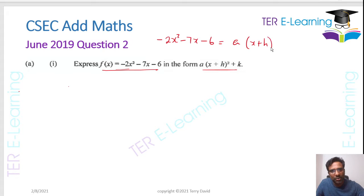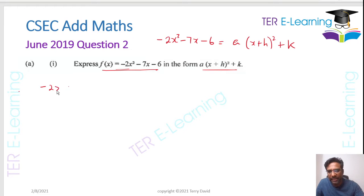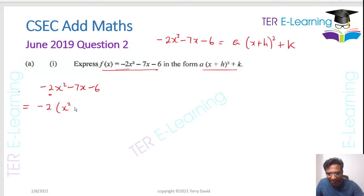We want to write it in the form a(x + h) all squared plus k. Now, the first method — we can factor out this minus 2, so this becomes minus 2 open brackets x squared plus 7 over 2 x plus 3. We don't do anything with the minus 2, leave it as is, and what we're going to do is complete the square.